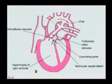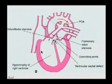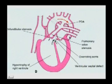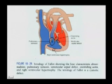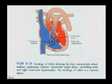This isn't necessarily terminal — it does need repair, but obviously you're getting a mixture of right and left side blood going through the systemic circulation. So cardiac function is compromised quite significantly. Here we see in summary the four characteristic abnormalities: pulmonary stenosis, ventricular septal defect, overriding aorta, and right ventricular hypertrophy.